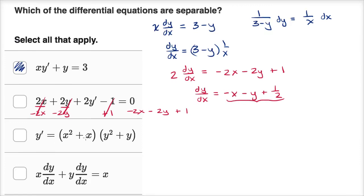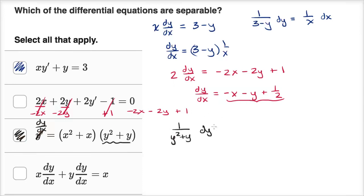This third one — they've already written it for us as a function of x times a function of y, so this one is clearly separable. If you want the separating: multiplying both sides by dx and dividing by the y expression gives one over y squared plus y dy equals x squared plus x dx. Clearly separable.